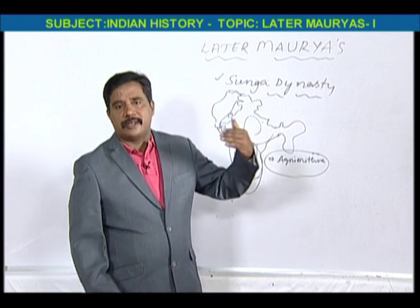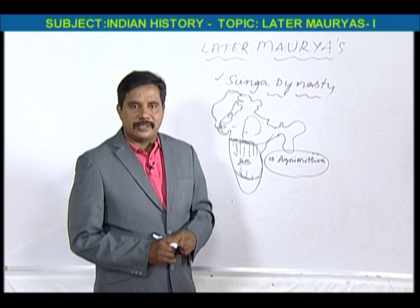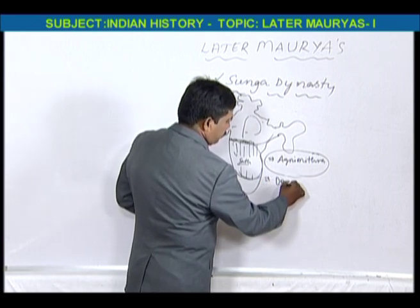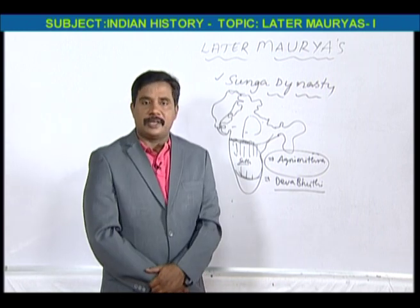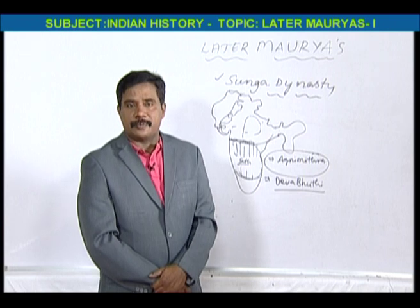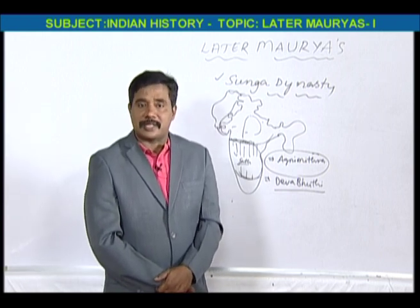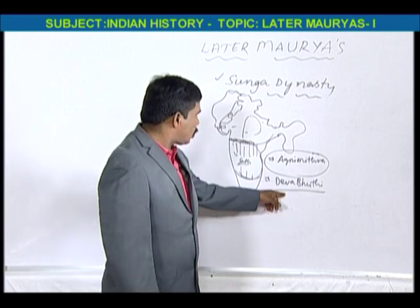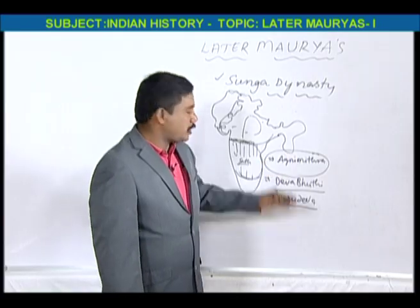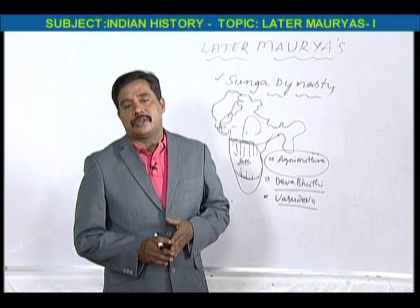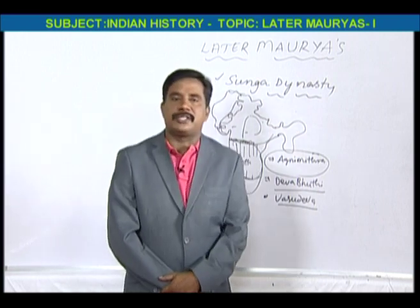Agnimitra defeated up to the Vidarsha area. Once Vidarsha was also defeated by the Shatavahanas, but Agnimitra gained it back. In the Shungas, the last king was Devabhuti. In the period of Devabhuti, there is a Garudastambha in Besanagar — the Vishnu temple. Devabhuti was killed by Vasudeva Kanva, and the Shunga dynasty came to a close.